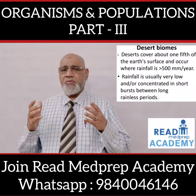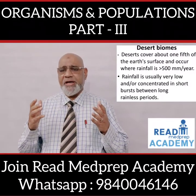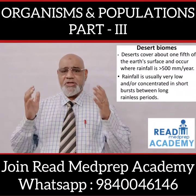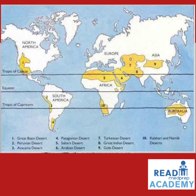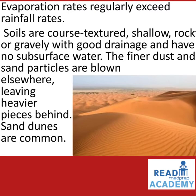Deserts cover about one-fifth of the earth's surface and occur where rainfall is less than 500 mm per year. Rainfall is usually very low and concentrated in short bursts between long rainless periods. Major deserts include the Great Basin Desert, Peruvian Desert, Atacama Desert, Patagonian Desert, Sahara Desert, Arabian Desert, Turkestan Desert, Great Indian Desert, Gobi Desert, and the Kalahari and Namib Deserts. Evaporation rates regularly exceed rainfall rates. Soils are coarse-textured, shallow, rocky or gravelly with good drainage and no subsurface water.